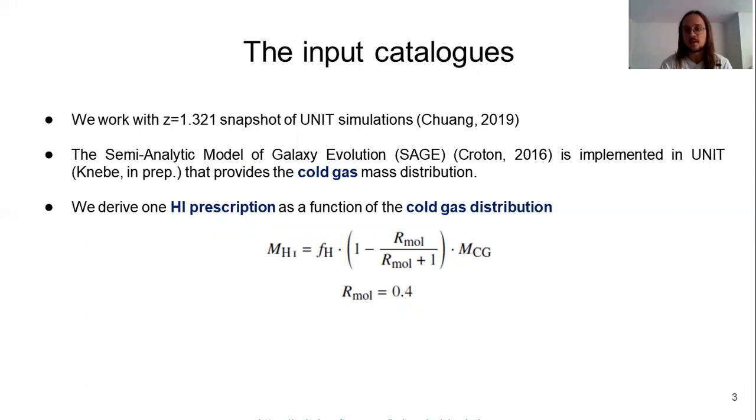In particular, we worked with a snapshot of dark matter halos at Redshift 1.3, in which the halos are assembled from dark matter particles using Rockstar. Now, the next step is to extract the neutral hydrogen. At this point, SAGE enters in the game,